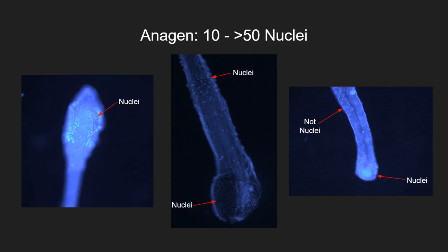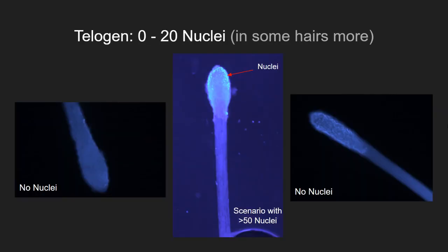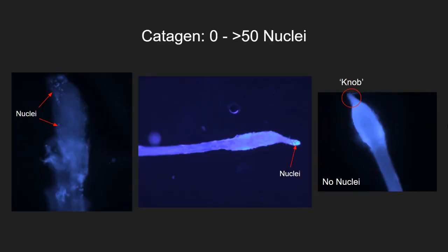I observed that anagen hairs have anywhere between 10 to more than 50 nuclei. Telogen hairs contained the least amount of nuclei, anywhere from 0 to 20, but in some cases more, as seen in the middle photo. Catagen hairs are a middle ground and contain anywhere from 0 to more than 50 nuclei.